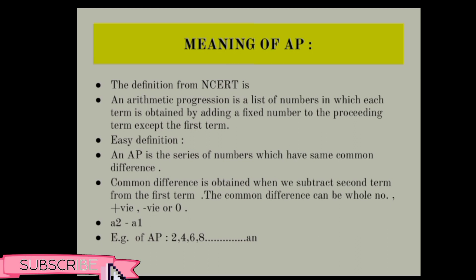Common difference is obtained when we subtract the first term from the second term. The common difference can be a whole number, positive, negative, or zero. It's a very easy formula: subtract the first term from the second term.